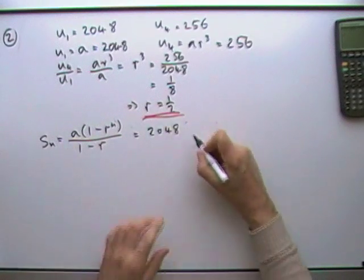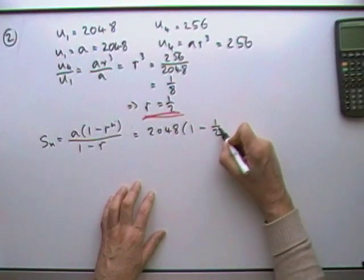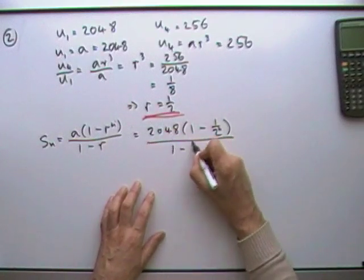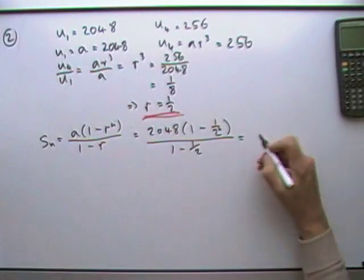A was 2048 times (1 - 1/2^N) over (1 - 1/2). That equals 4088.